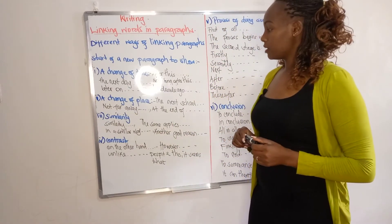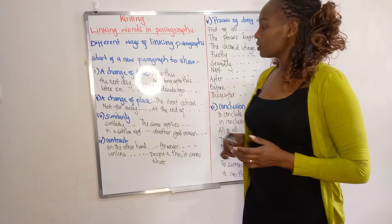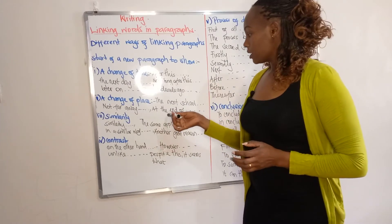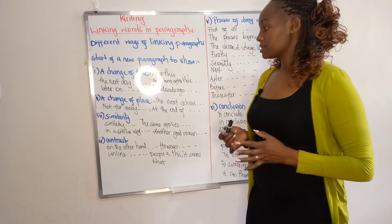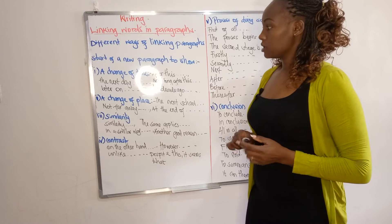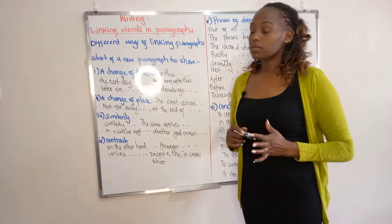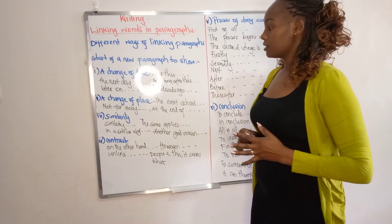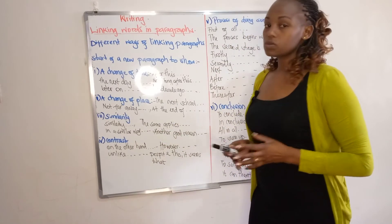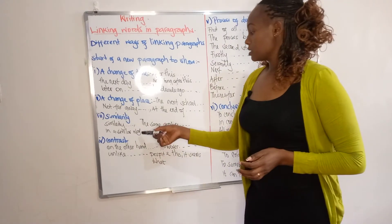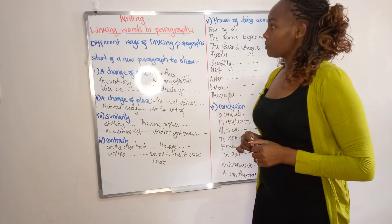When we want to show a change of place at the start of a new paragraph, we may use words like 'the next school,' 'not far away,' 'at the end of this,' 'a few kilometers away,' 'one meter away,' among others. When we want to show similarity at the start of a new paragraph, we may use expressions like 'the same applies to,' 'in a similar way,' 'another good reason,' among others.